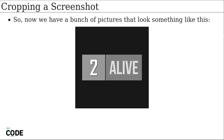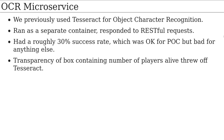Now we have a bunch of cropped pictures. We used Tesseract for our proof of concept — it had about a 30% success rate, which was fine for POC but bad for anything beyond that. The transparency of the box containing the number of players alive completely threw it off. You'd get back garbage — sometimes a full number if you were lucky, sometimes a decimal number, sometimes something like a five and a pipe. So there were all these checks for isNaN, isInt, and so on. It was bad.